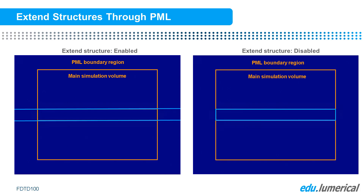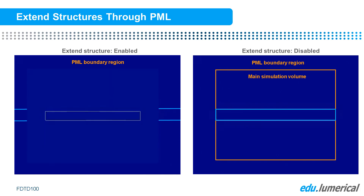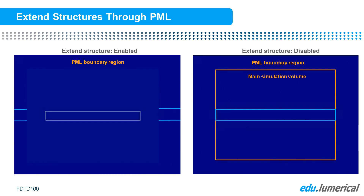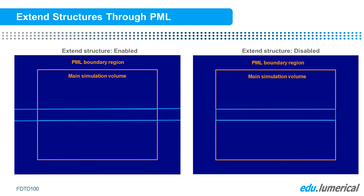When using the PML boundaries, the Extend Structure Through PML option is selected by default. When this option is enabled, the solver will automatically extend any structure touching the inner edge of the boundary through the full thickness of the PML boundary. This prevents reflections that can occur if a material interface exists within the boundary condition region.